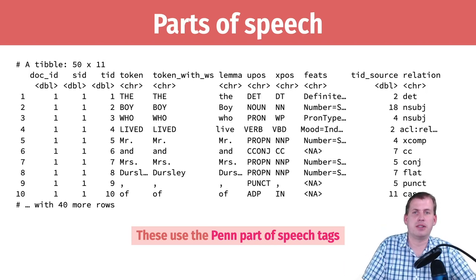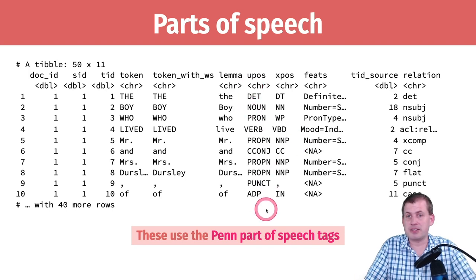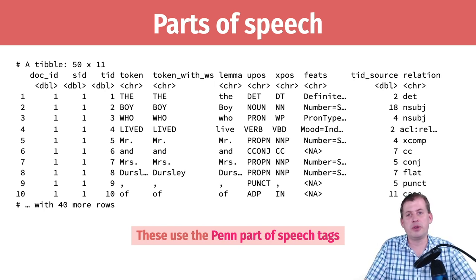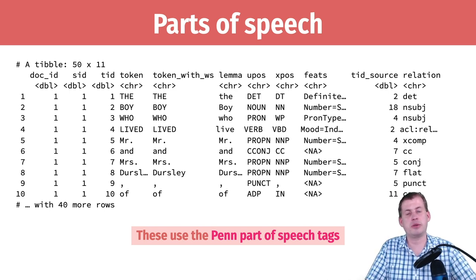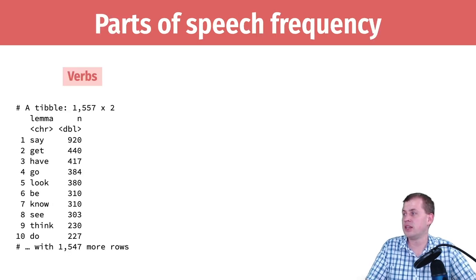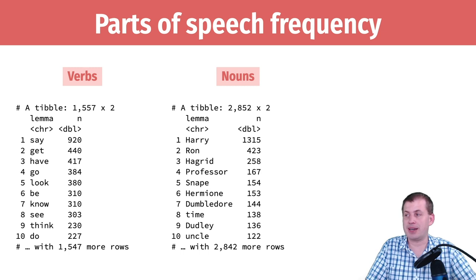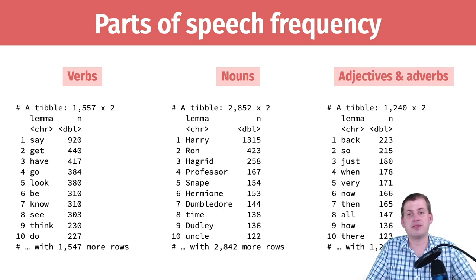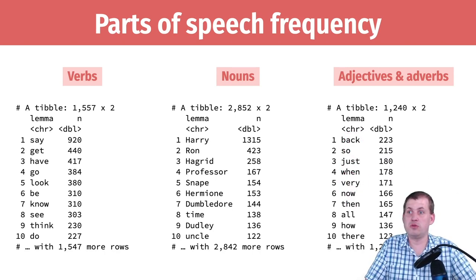What's really important is that once you identify all of these parts of speech, you can filter, group by, and summarize — it's just a dataset. You can get a count of all pronouns, find the most common proper names in every chapter, or every 10 lines. Here are the most common verbs in Harry Potter — say, get, have, go, look — kind of boring. The most common nouns: Harry is first, followed by Ron, then Hagrid is actually the third most common proper noun. Time is the most common non-proper noun, then uncle. Adjectives and adverbs are not super helpful — just when, very, now — but you can find interesting things in there.